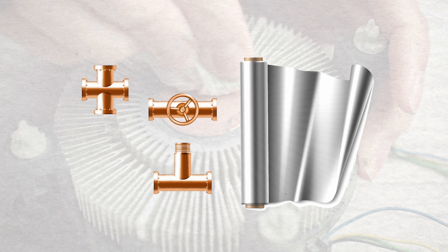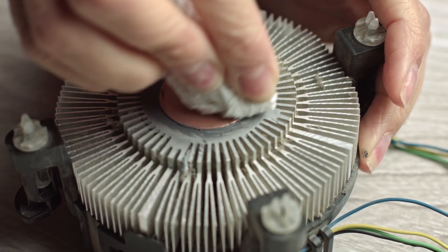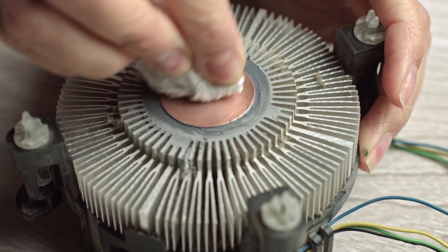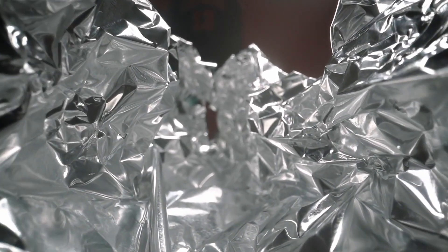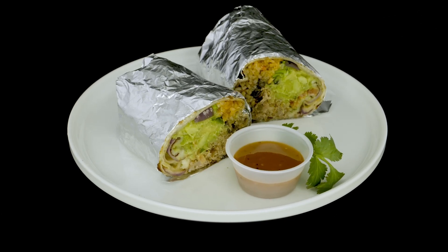Conversely, items with higher thermal conductivity are often used in the creation of heat sinks, which are designed to disperse heat rapidly. This leads us to aluminum, the star of our story, which boasts a high thermal conductivity, making it an excellent choice for wrapping food.